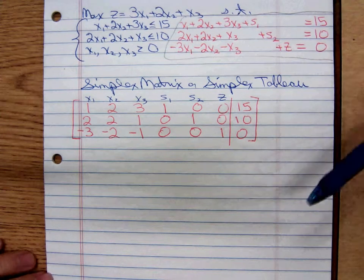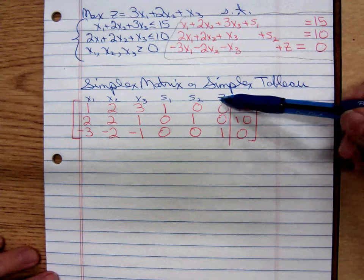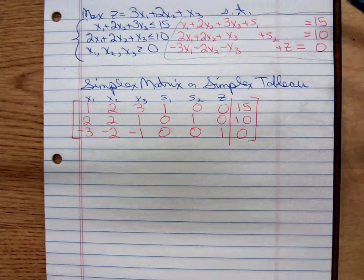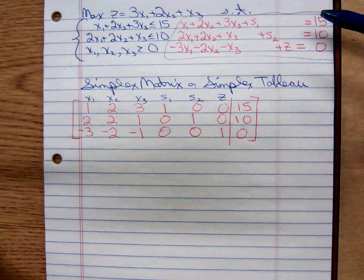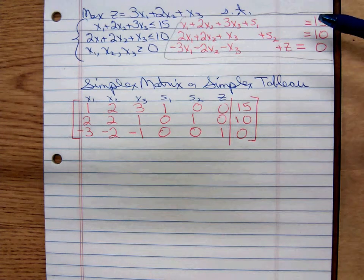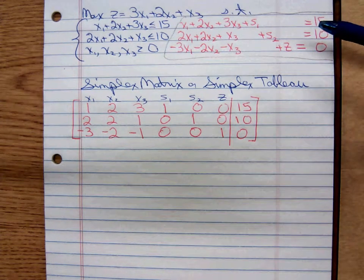As we go through the simplex process, you're going to see that that second and last column, the z column, will never change. As a matter of fact, some people don't even show it because it never changes. I like to show it, though.